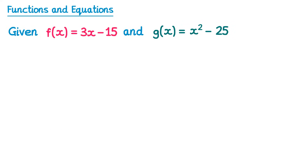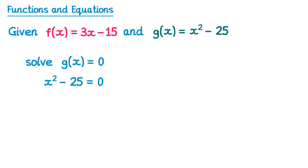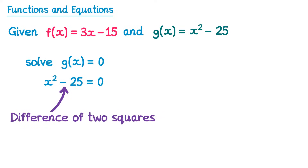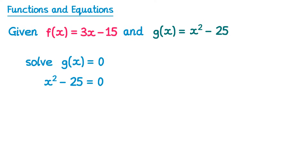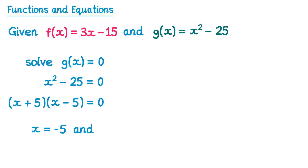Now in this question we have two functions — one for f and one for g. Let's start by solving g(x) = 0. We know g(x) = x² − 25, so we replace g(x) with x² − 25 and set it equal to 0. You should recognise this as a difference of two squares, which factorises into (x + 5)(x − 5) = 0. This gives two solutions: x = −5 and x = 5.